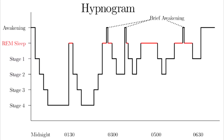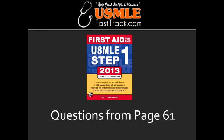REM sleep involves dreaming, loss of motor tone, memory processing, erections, and increased brain oxygen use. EEG waveform in REM is beta. Mnemonic for all EEG waveforms: 'at night BATS Drink Blood' — Beta (awake, eyes open), Alpha (awake, eyes closed), Theta (N1), Sleep spindles/K complexes (N2), Delta (N3), Beta/Blood (REM).